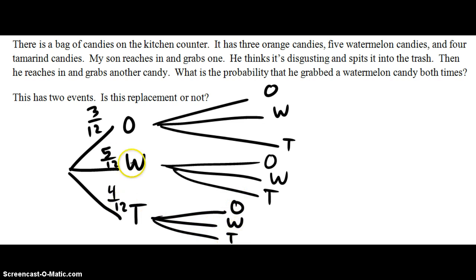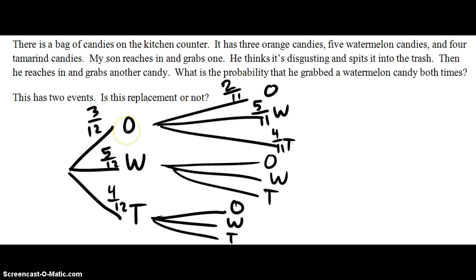We don't replace here, so if they got an orange first, there's only two orange left and only eleven total. Orange first: watermelon is still five out of eleven; tamarind is four out of eleven. Notice the second round without replacement is always over eleven, because we had twelve and already got one. Watermelon first: orange is three out of eleven; watermelon is only four out of eleven because we already got one; tamarind is four out of eleven. Tamarind first: orange is three out of eleven; watermelon is five out of eleven; tamarind is only three out of eleven.